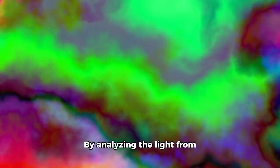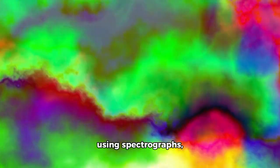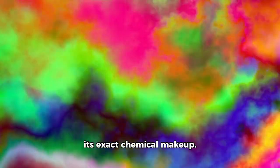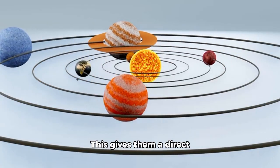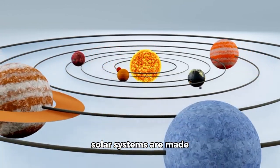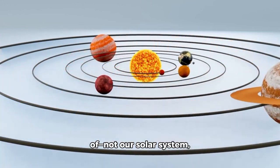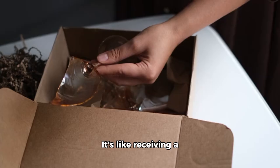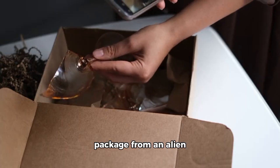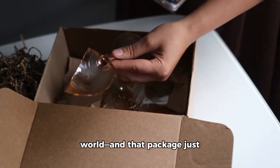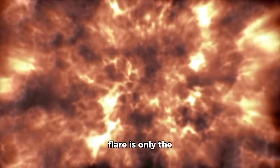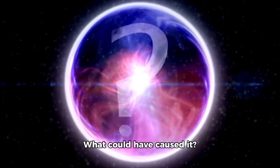By analyzing the light from this illuminated cloud using spectrographs, scientists can determine its exact chemical makeup. This gives them a direct sample of the stuff that solar systems are made of, not our solar system, but the one 3I Atlas came from, light years away. It's like receiving a package from an alien world, and that package just burst open for all to see. But this incredible flare is only the beginning of the mystery. What could have caused it?